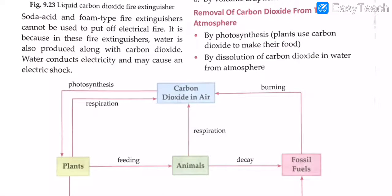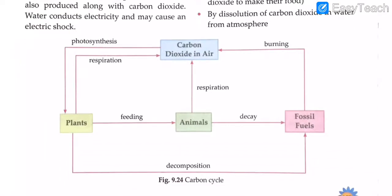Carbon dioxide is removed from the atmosphere in two ways: first, by photosynthesis; and second, by dissolution of carbon dioxide in water from the atmosphere. Carbon dioxide is soluble in water, so from the atmosphere it dissolves into water, reducing the atmospheric CO2 and keeping everything balanced.